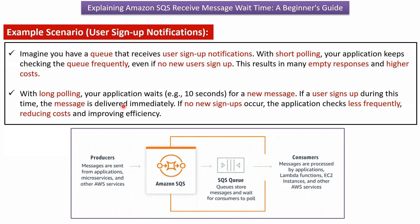With long polling, your application waits, for example, 10 seconds for a new message. If a user signs up during this 10 seconds, the message is delivered immediately. If no new user signup occurs, the application checks less frequently, which reduces cost and improves efficiency.